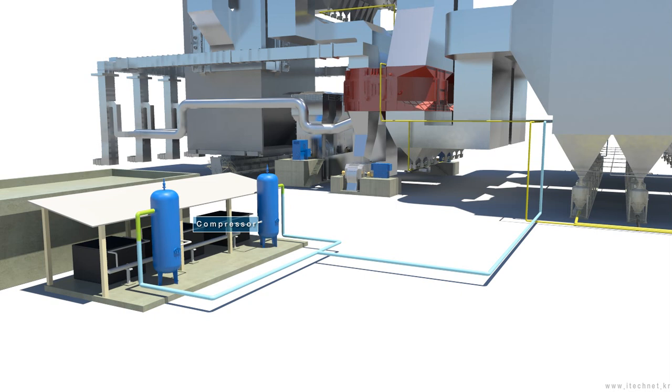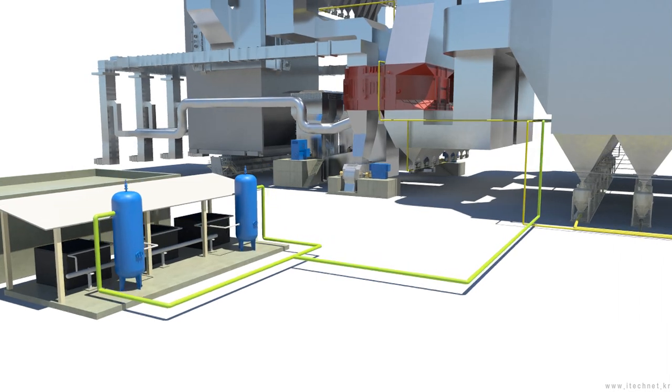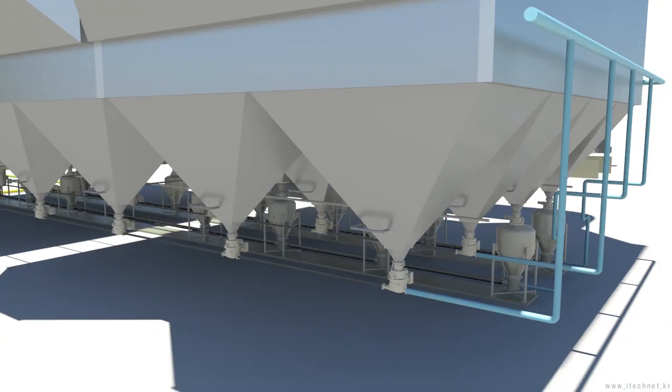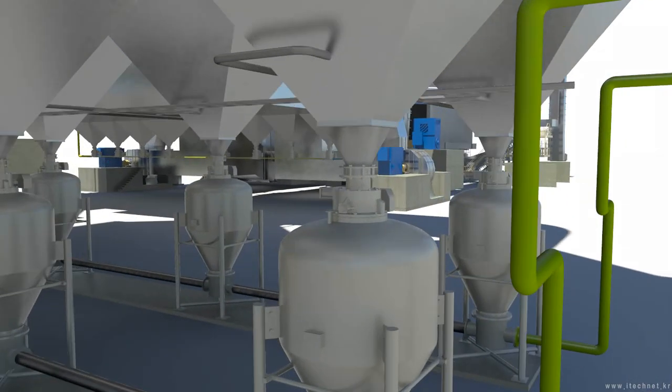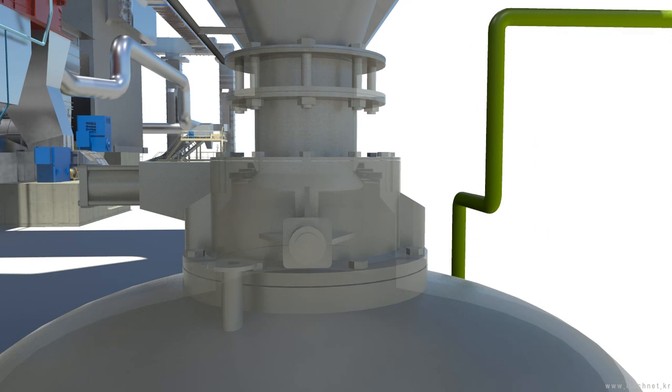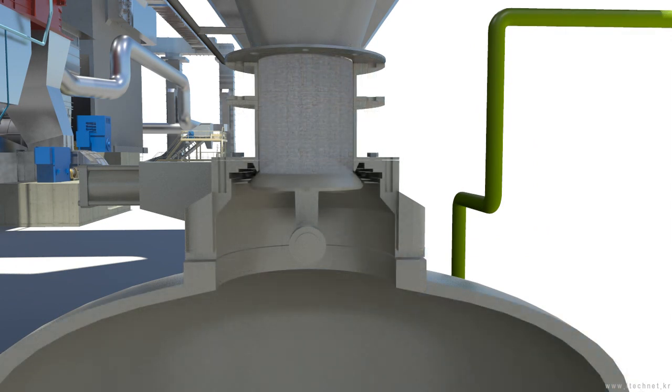Compressed air from the compressor is sent to the ash system through pipes. The ash collected at the hopper of each system drops into the pump after opening the valve.